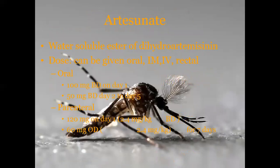Artesunate is a water-soluble ester of dihydroartemisinin, and it can be given orally, intramuscularly, or intravenously. Orally: 100 mg twice a day on day one, then 50 mg twice a day from day two to day five. Parenterally: 120 mg on day one, followed by 60 mg once daily for seven days.